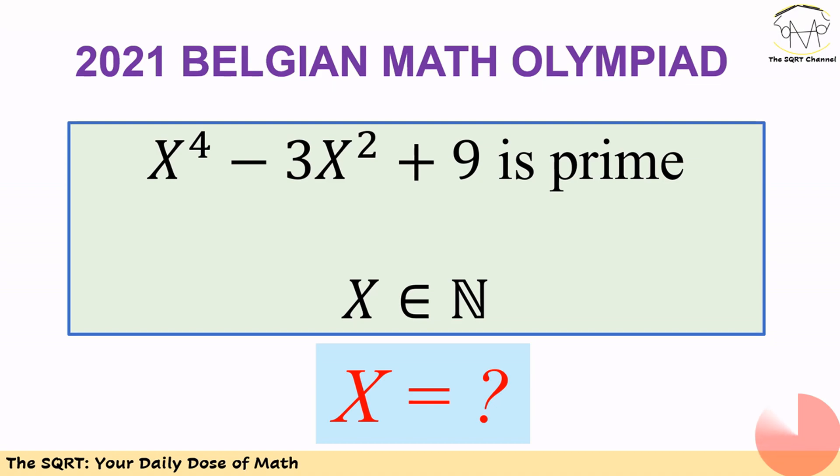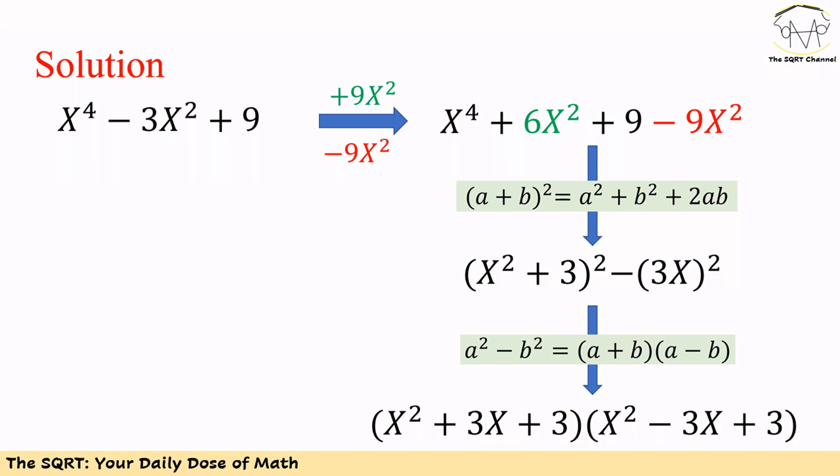To solve this problem we are going to use a few identities. Let's start with the expression we have: x to the power of 4 minus 3x squared plus 9. To simplify it, we add and subtract 3x squared. If we do so, we end up with x to the power of 4 plus 3x squared plus 9, and then we subtract 9x squared at the end.